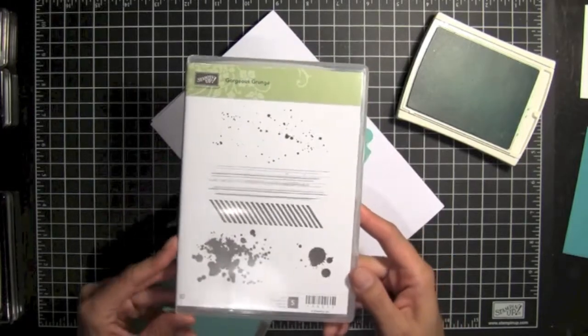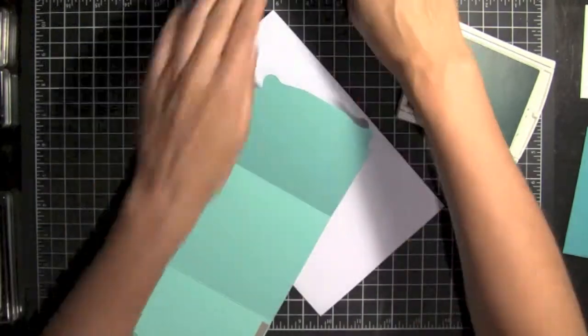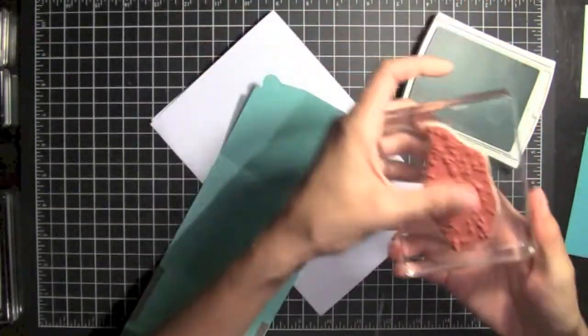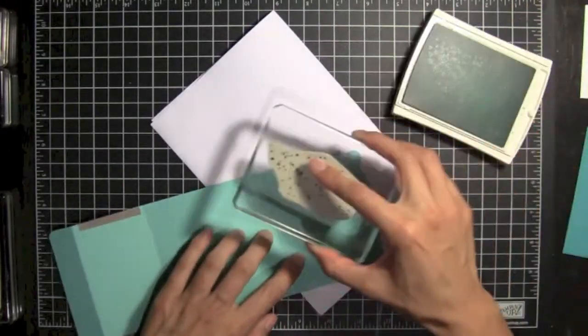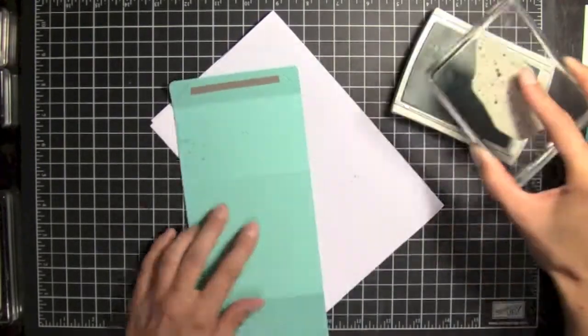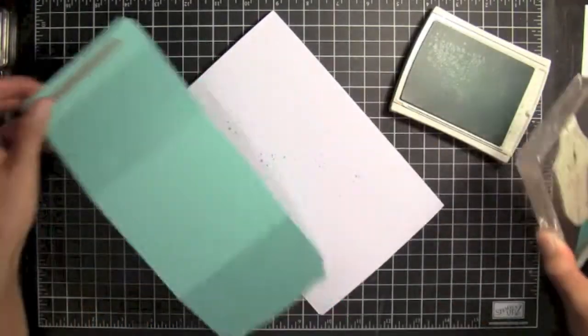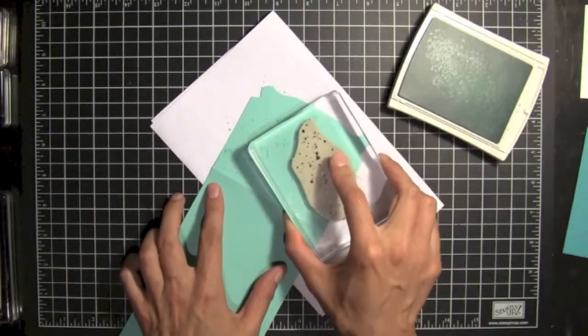And it's kind of an updated version of the Itty Bitty Background set that Stampin' Up! used to offer. And so it has a nice splatter stamp that we're going to put on the top inside. And then we'll put it on this piece, too. As well as this top piece over here. So we've got that one.